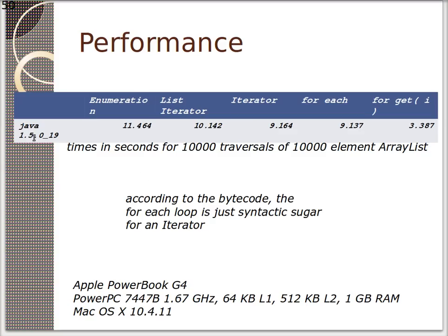If you go and look at the bytecode, at least for this version of Java, the foreach loop was just syntactic sugar. Now notice, this is Java 1.5. You guys are probably using 1.6 or 1.7, so this is a little outdated, especially this computer. Like seriously, who uses these anymore?